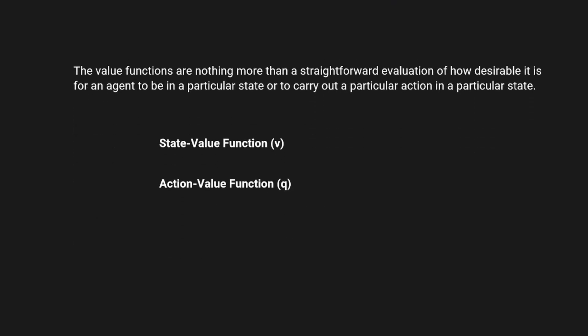Here's where it gets interesting: value functions. These are tools that help the agent evaluate how good a state or action is. There are two main types. The State Value Function tells us how valuable a state is when the agent follows a specific policy — it's like asking, how good is it to be here? The Action Value Function tells us how valuable a specific action is from a state — it's like asking, how good is it to do this here? The action value function is often called the Q-function, where Q stands for quality. These functions are the building blocks that help the agent evaluate its decisions and guide its learning process.